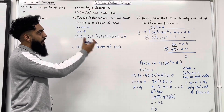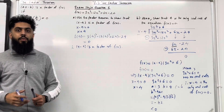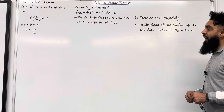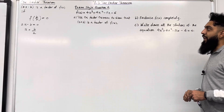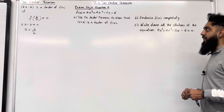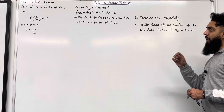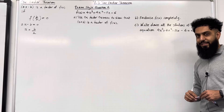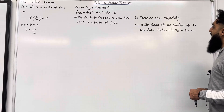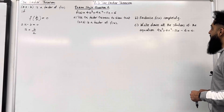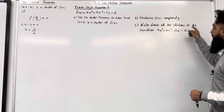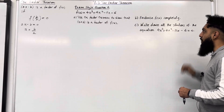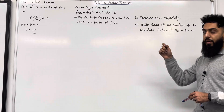That completes Part B and exam style question 1. Exam style question 2: f(x) = 4x³ + 4x² − 11x − 6. Part A: use the Factor Theorem to show that x + 2 is a factor of f(x). Part B: factorise f(x) completely. Part C: write down all the solutions of the equation 4x³ + 4x² − 11x − 6 = 0.